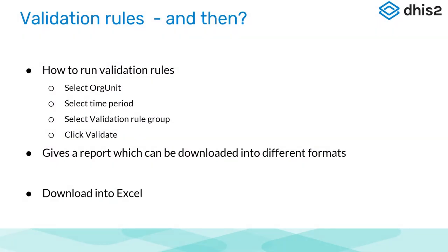How to run validation rules: you select an org unit, you select a time period, you select your group, and you click validate. Depending on the size of your database and the number of rules to be run, be careful in what you select — try to avoid crashing the system. Once you have run the validation rules, you get a report which can be downloaded into different formats. Excel is the easiest.